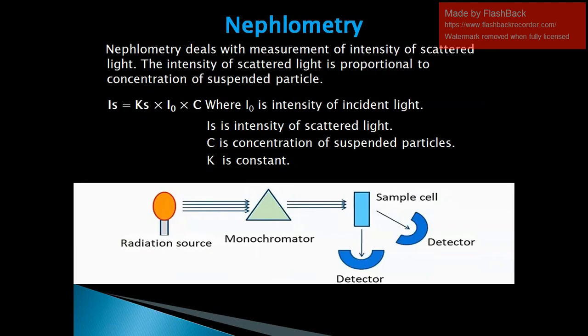Nephelometry deals with the measurement of intensity of scattered light. The intensity of scattered light is proportional to the concentration of suspended particles. The equation is: I_s = K_s × I₀ × C, where I₀ is the intensity of incident light, I_s is the intensity of scattered light, C is the concentration of suspended particles, and K is a constant. The radiation source, monochromator, and sample cell are placed in a straight line, while the detector is placed at 90 degrees or 45 degrees to the radiation source.